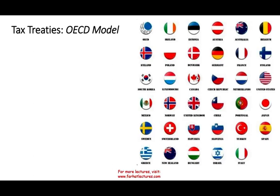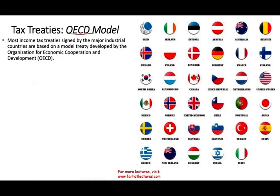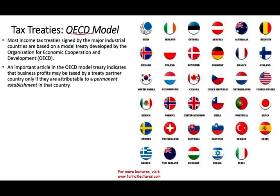There are many tax treaties around the world. One model is the Organization for Economic Cooperation and Development — the OECD model. Most income tax treaties signed by the major industrial countries follow this model. An important article in this model treaty indicates that business profit may be taxed by a treaty partner country only if it is attributable to a permanent establishment. Simply put, they say: I'm only going to tax you if you have a permanent establishment in my country.